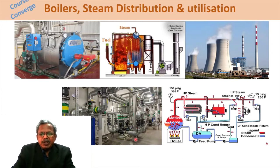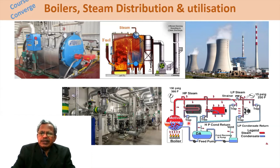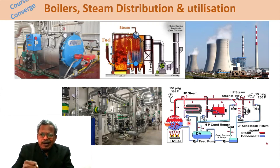For the steam distribution system, a number of components are covered: condensate recovery systems, heaters, air heaters, coolers, condensers, evaporators, piping designs, and steam traps. The overall energy efficiency of the thermal energy system utilities is covered, and you will know how to conduct a thermal energy audit across all these utilities.